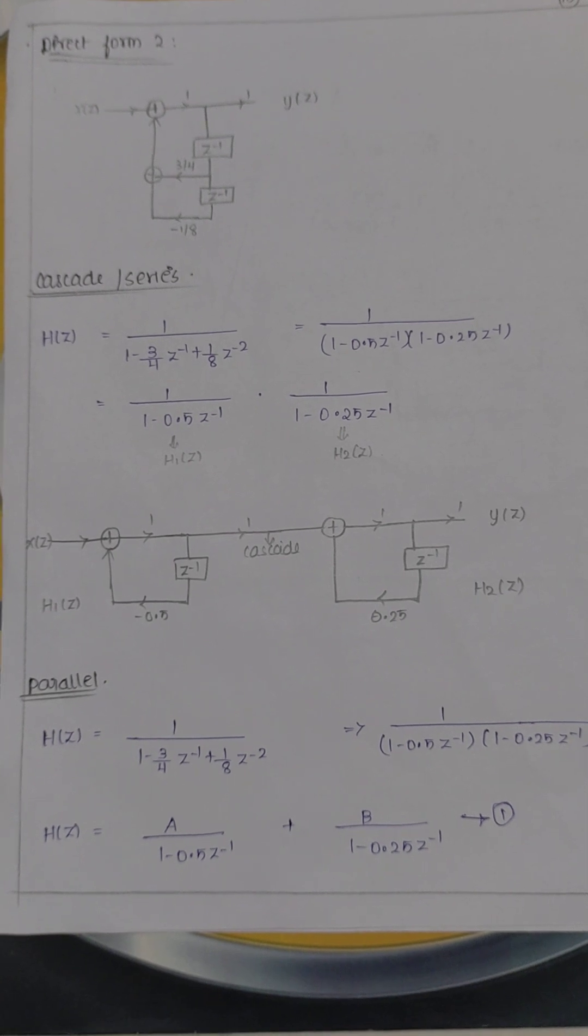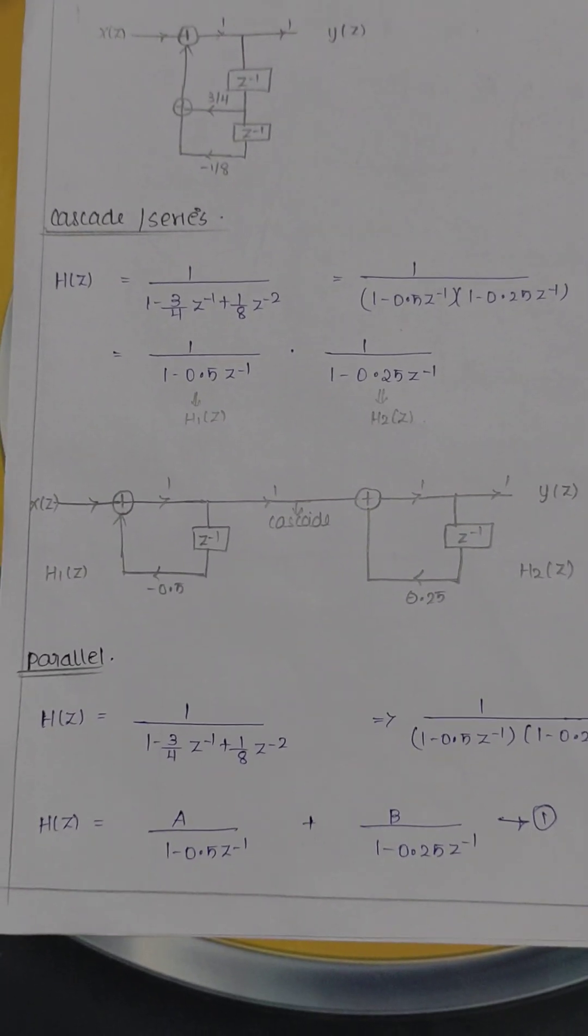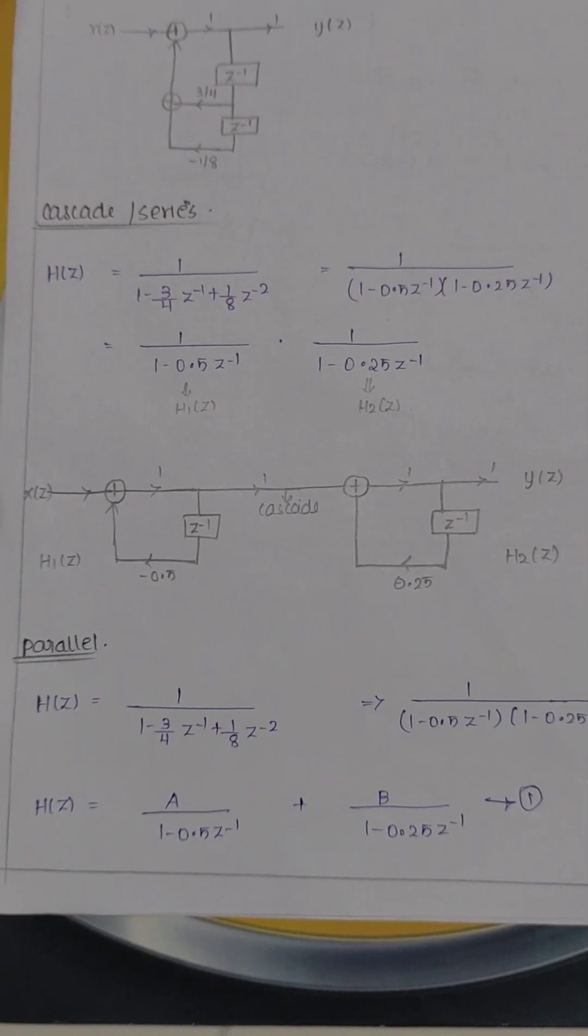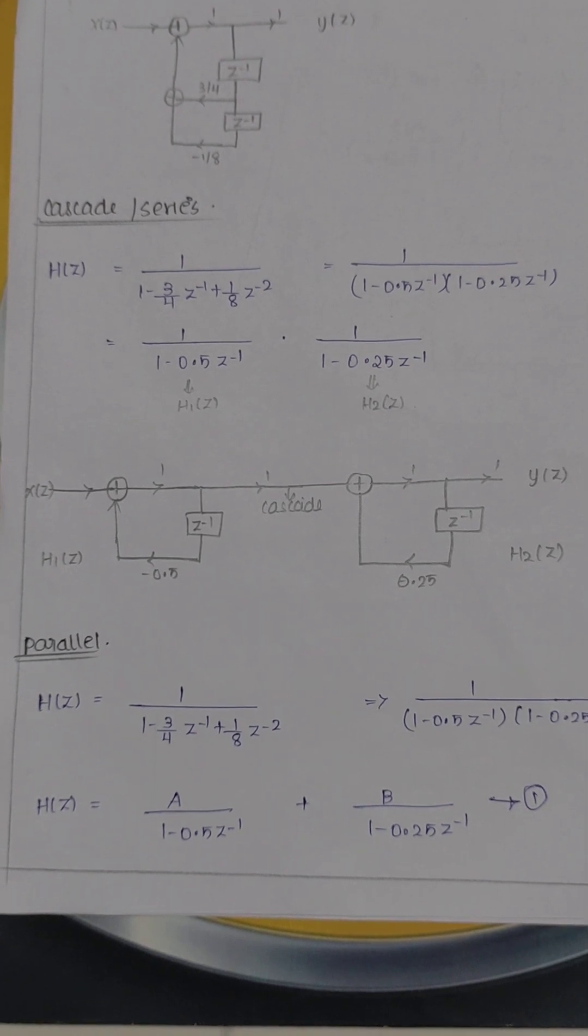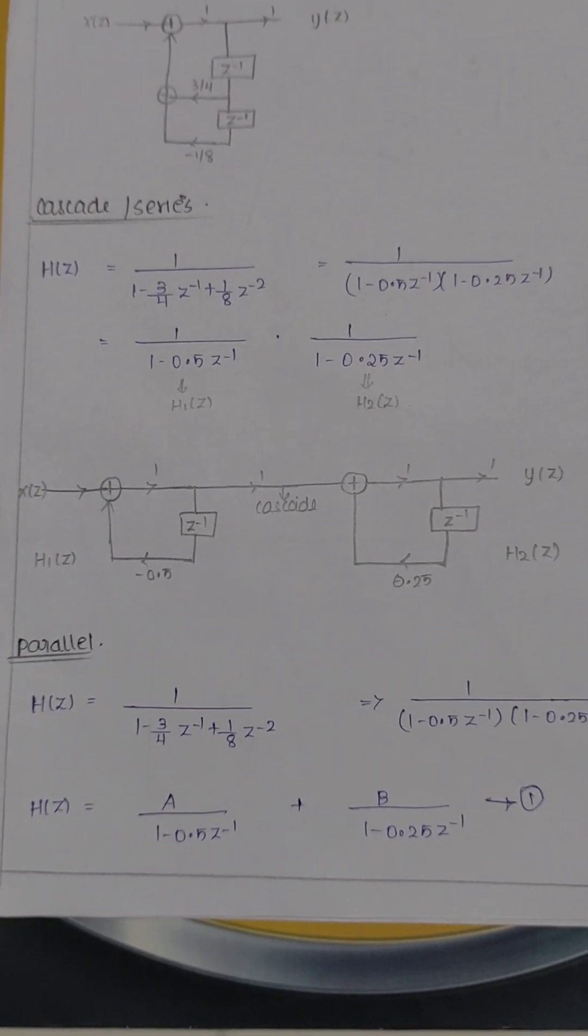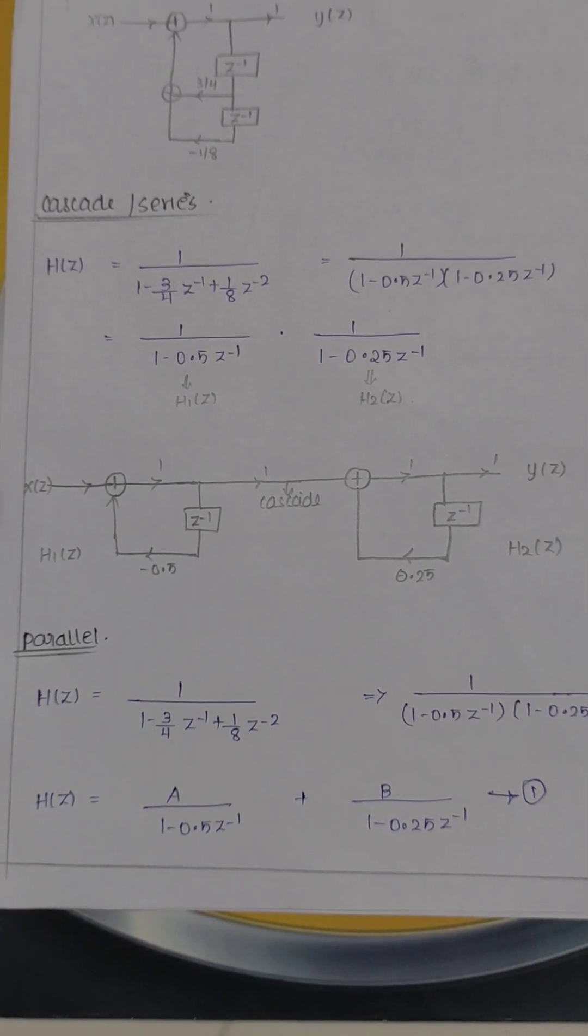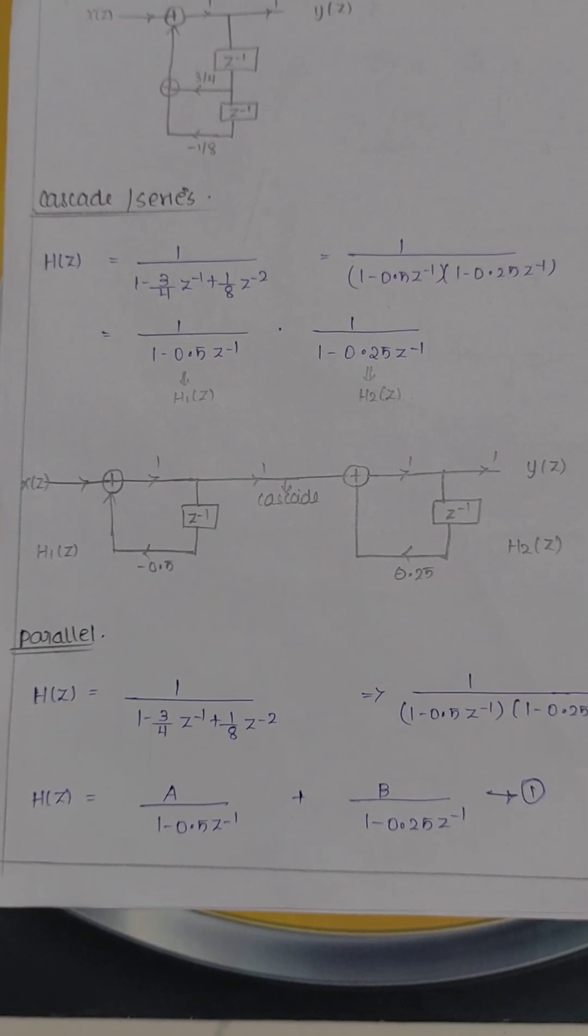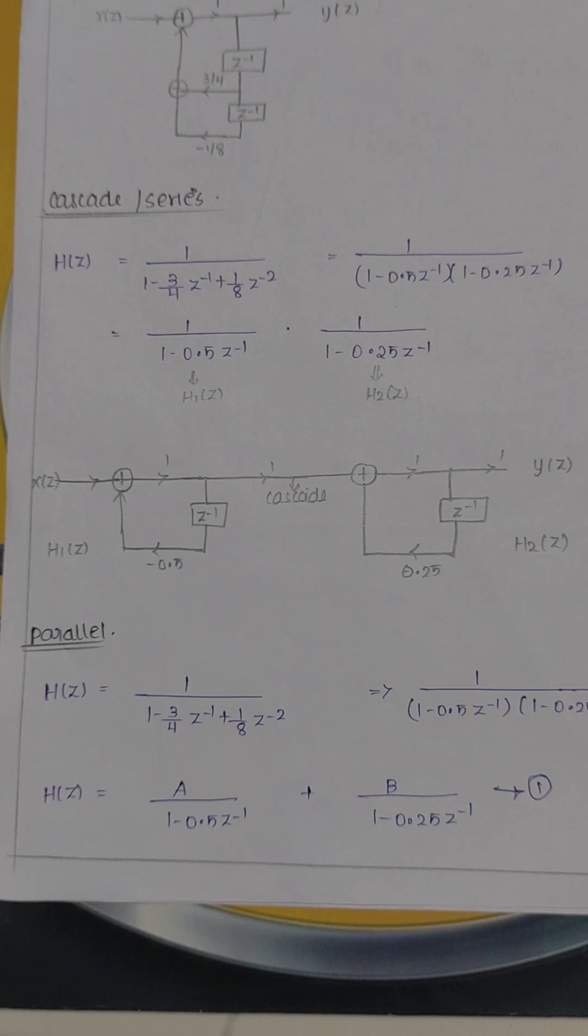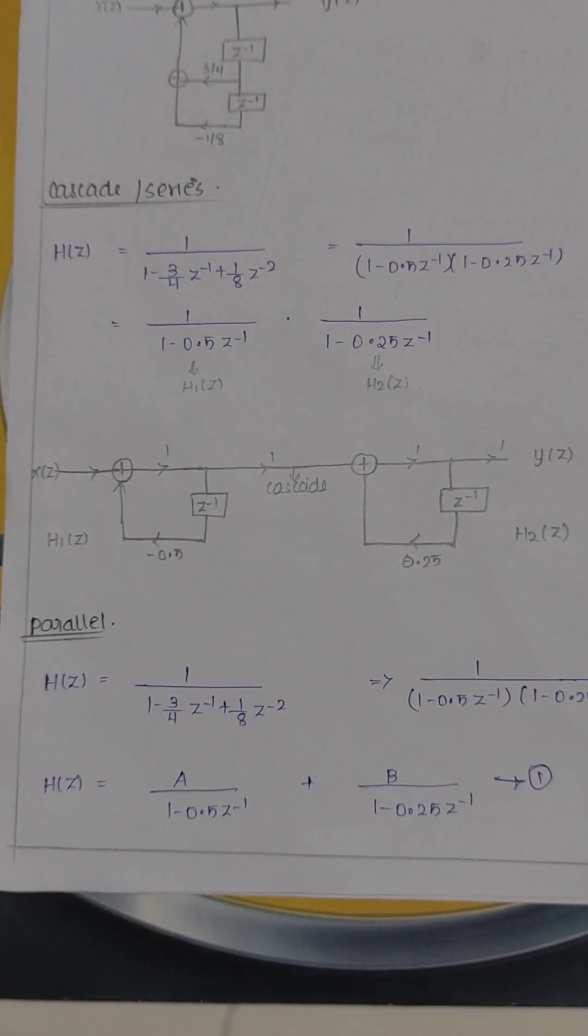All should be drawn in direct form. First box, h1(z). Second box, h2(z). Both to be interconnected and interjoined, that is called cascade. In the first h1(z), highest order is z inverse. Second h2(z) highest order also z inverse. The multiplier value is 0.5, 0.25. Delay is only one delay. Adder also only one adder. Input x(z), output y(z).